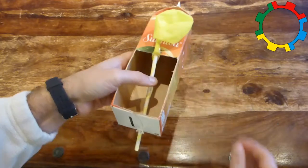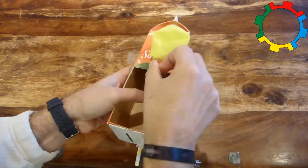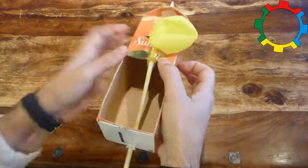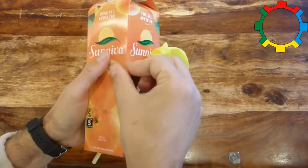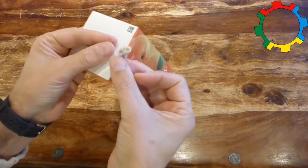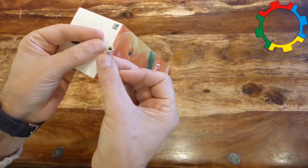Attach the straw with sticky tape to the foredeck and to the stern. The sticky tape at the stern shall be at the outside and seal the hole around the straw.